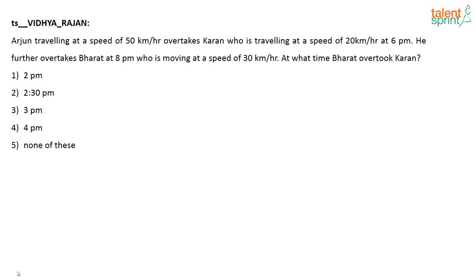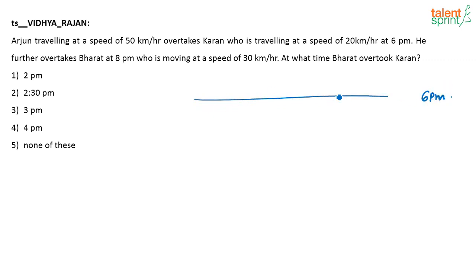Arjun is travelling at a speed of 50 km per hour and overtakes Karan, who is travelling at a speed of 20 km per hour, at 6 p.m. Let us draw the time frame here. At 6 p.m., Arjun is overtaking Karan, so Arjun and Karan are at the same place at 6 p.m.